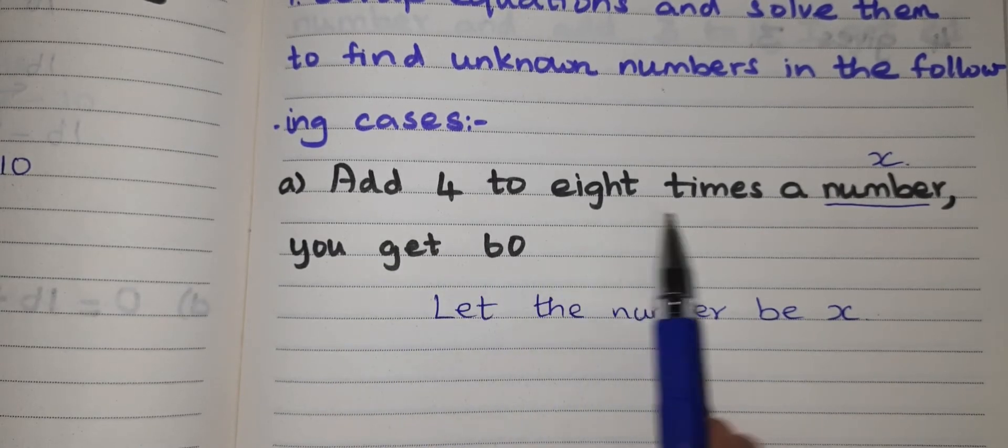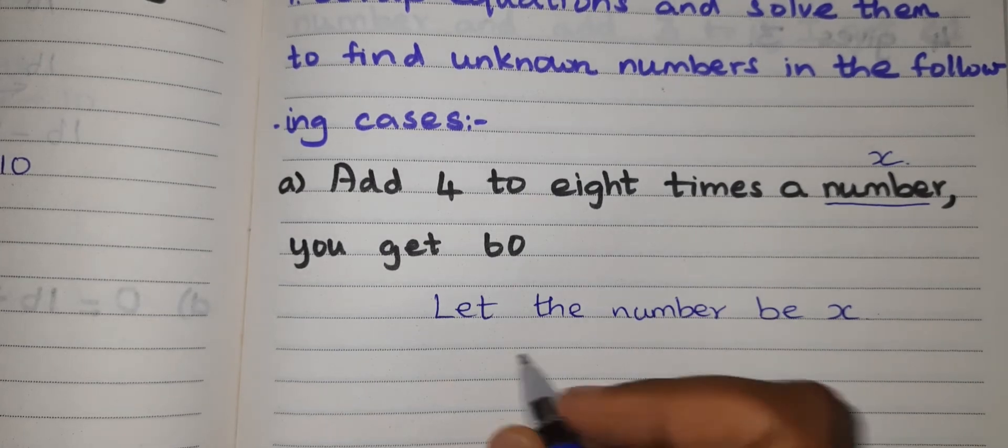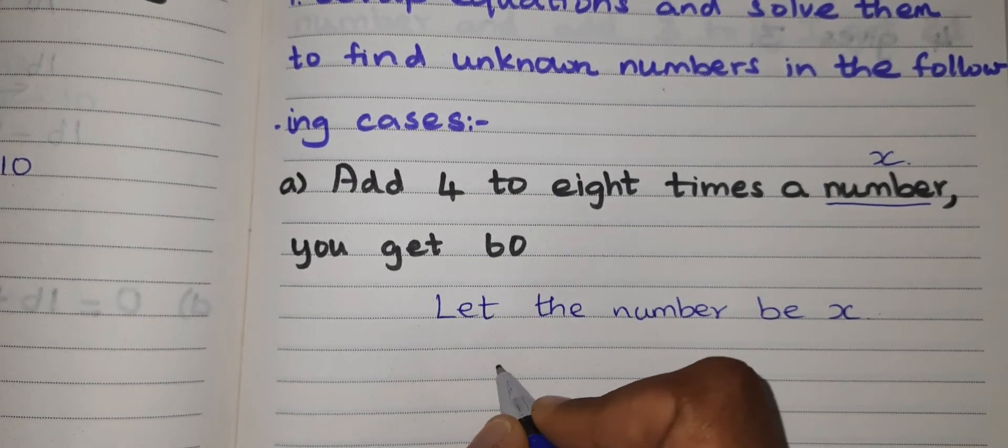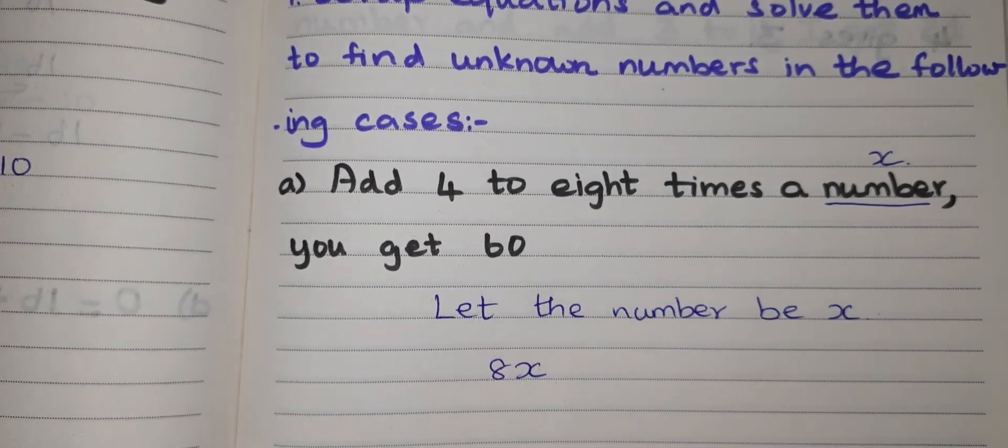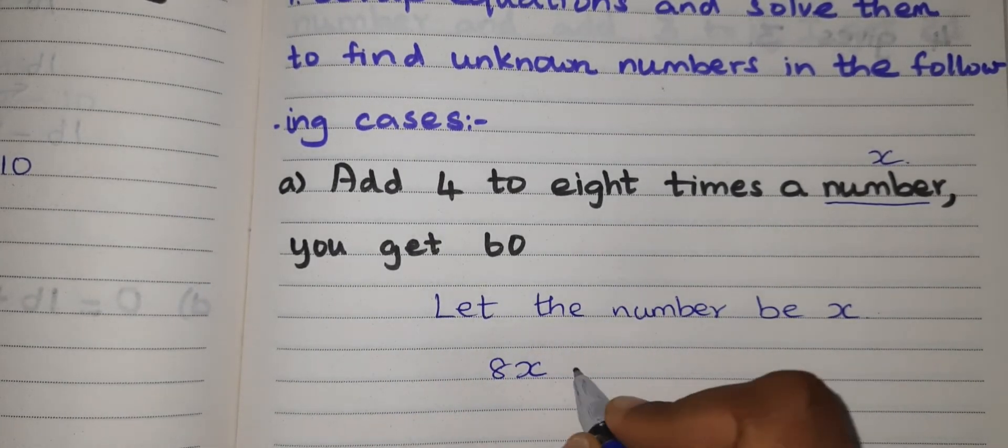Next, 8 times a number. 8 times means 8 into, that is 8X. Add 4, so now I have to add 4.